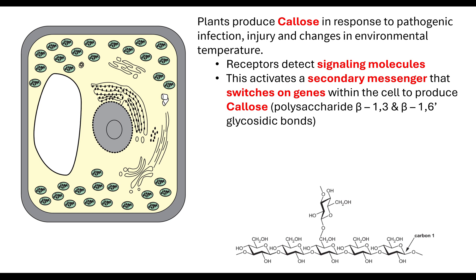Callose is a polysaccharide that forms glycosidic bonds. When you are given a diagram, it is important to look for hints — for example, if carbon number one is labelled, you should be able to identify where carbon two and three are. This allows you to identify a beta 1-3 glycosidic bond. Callose also has a 1-6 glycosidic bond. In the diagram this is labelled in purple. Make sure you take time to look at any diagrams given in the stem of a question.